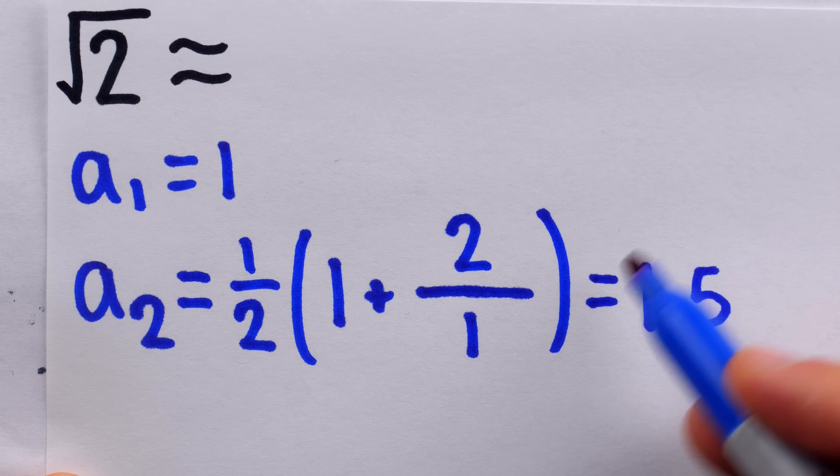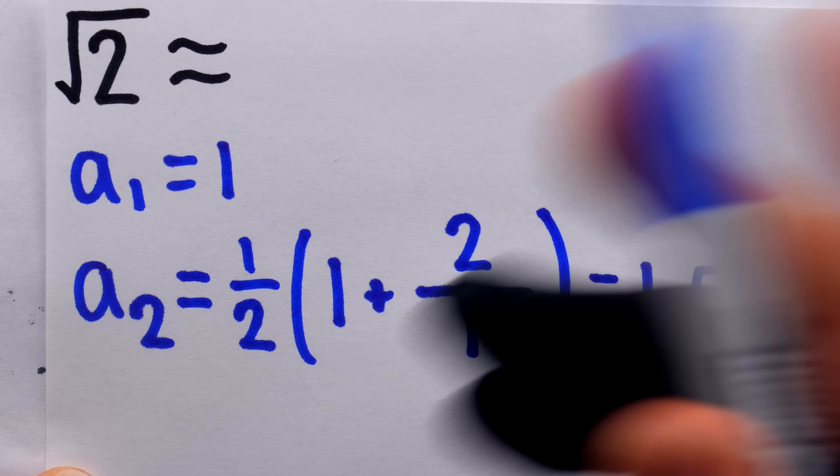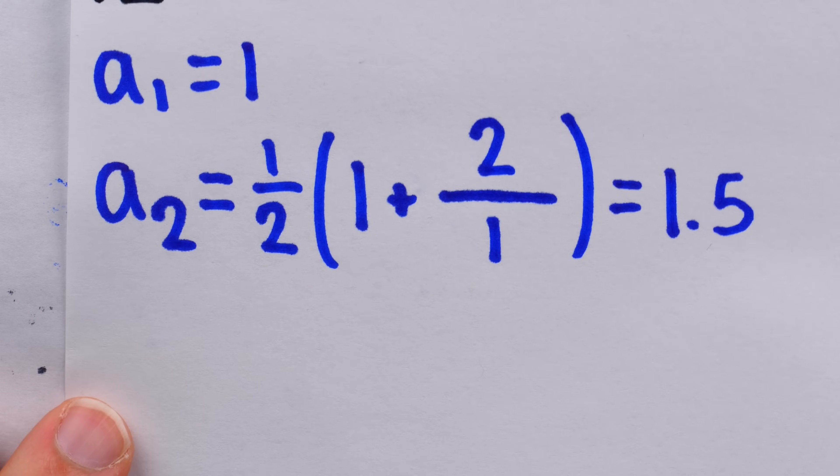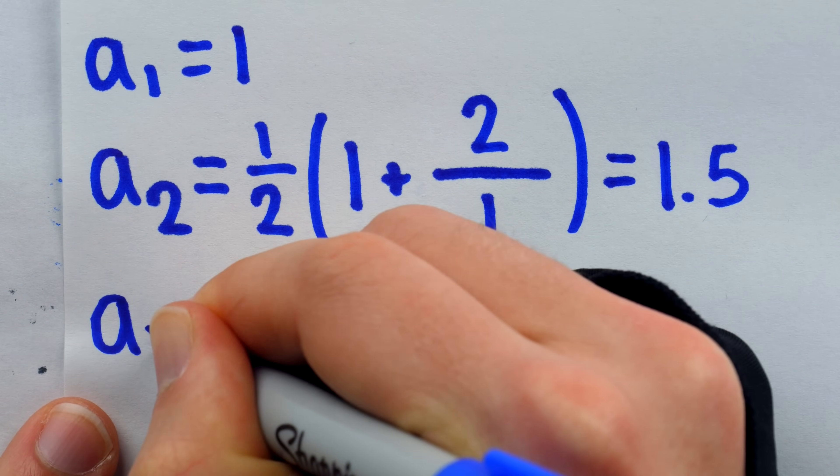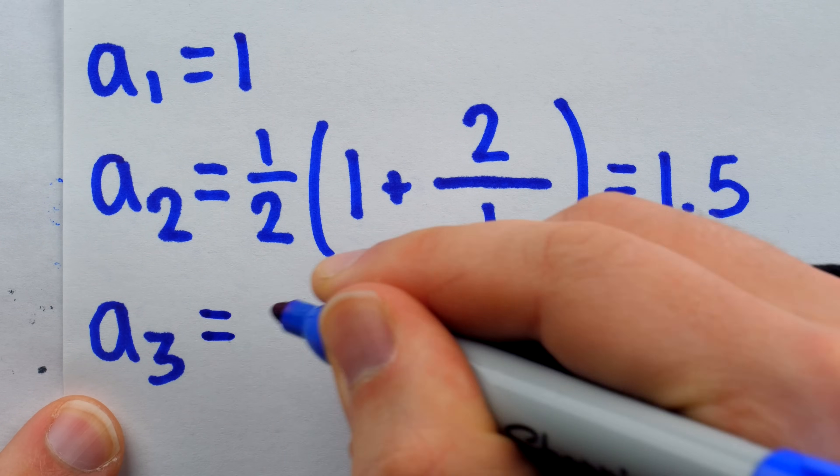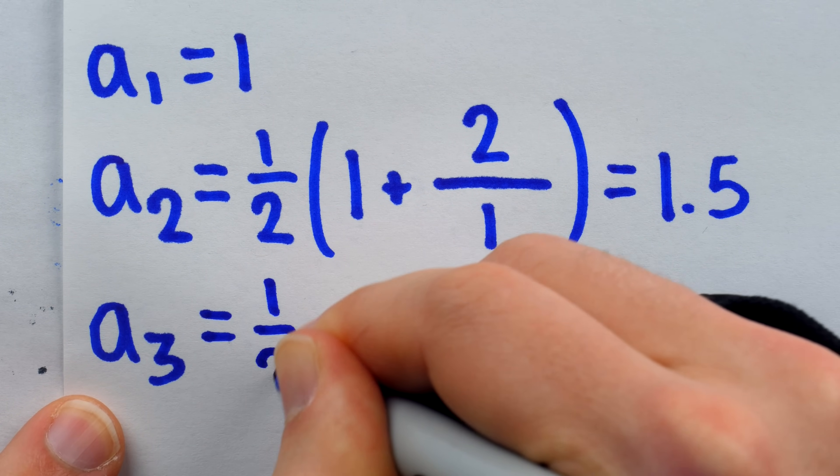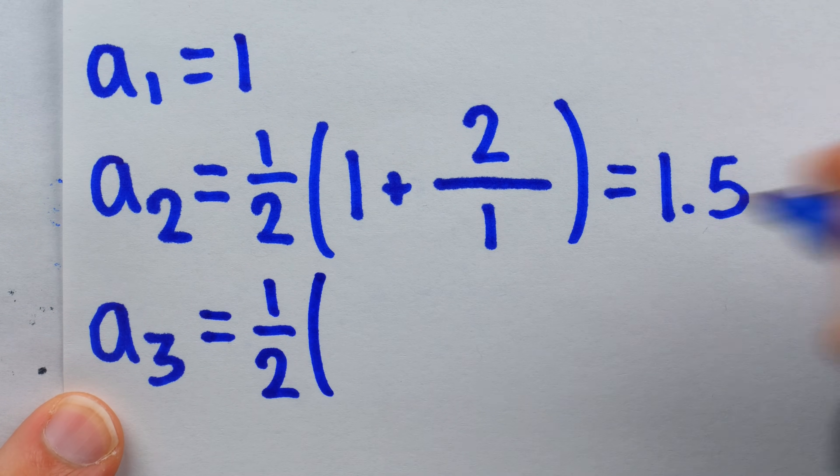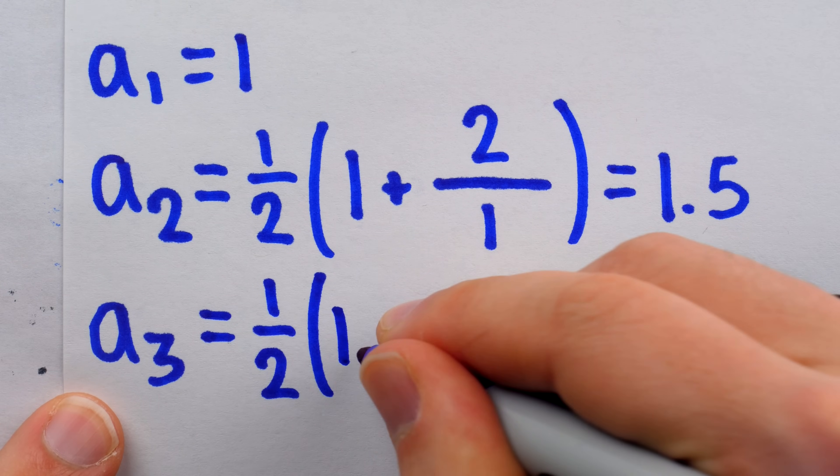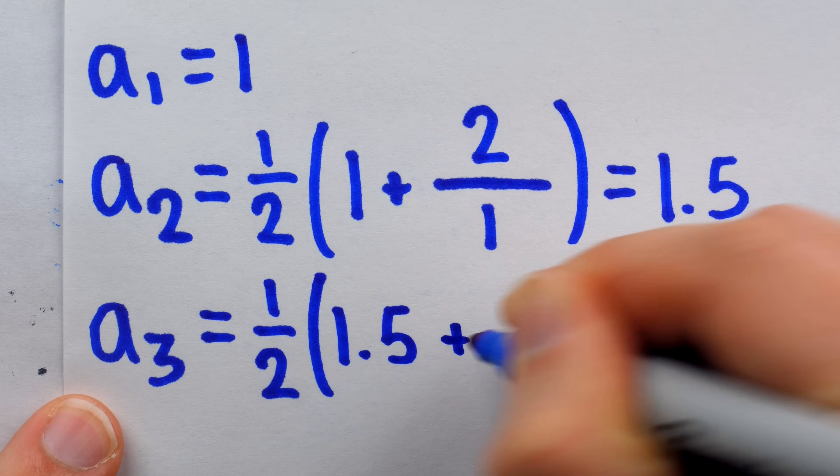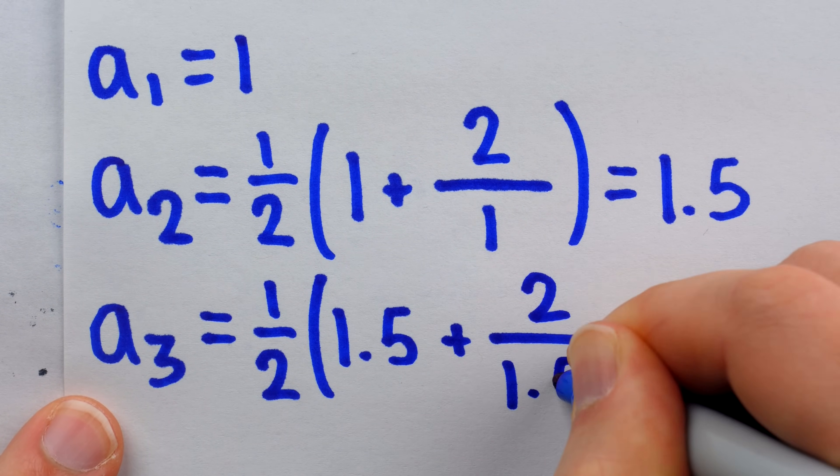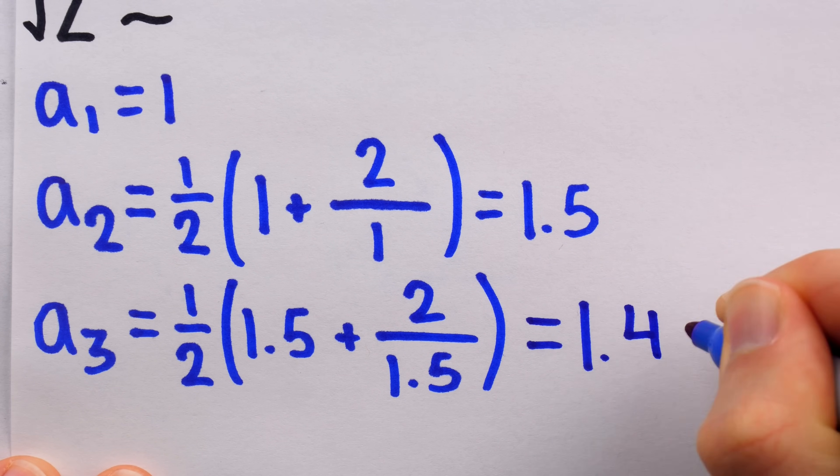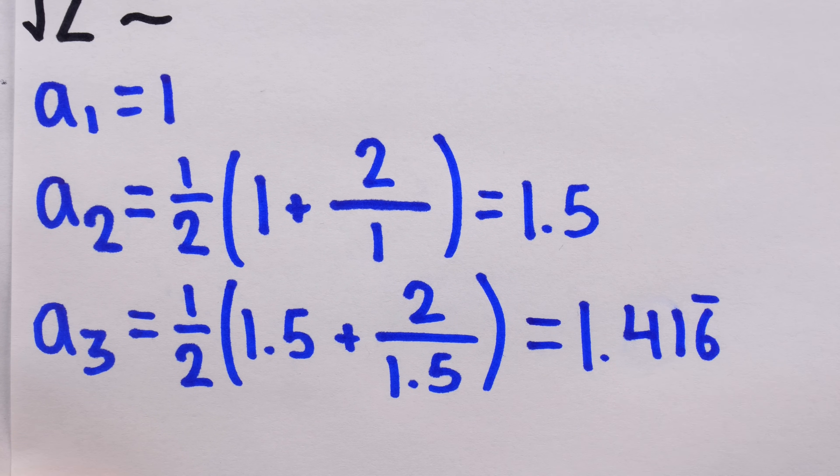This is indeed closer to the square root of 2 than this is, but we can continue this process using Heron's method to get better and better approximations. If we want a better approximation, let's just do the same thing. Take 1 half multiplied by the previous guess, which is 1.5, plus 2 divided by the previous guess of 1.5.